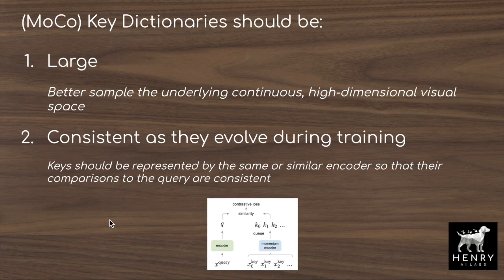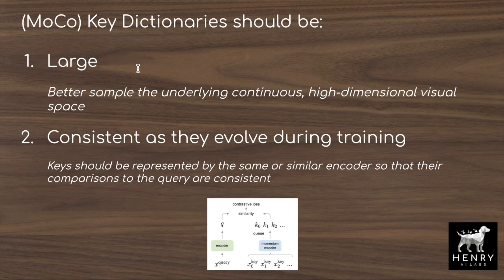The key dictionaries should be large to better sample the underlying continuous high-dimensional visual space. In metric learning, hard negative mining tries to find the best negative keys for the contrastive loss. With a large enough dictionary, you can average out the need for deliberate hard sample mining, naturally allowing the function to separate positive and negative query-key pairs.